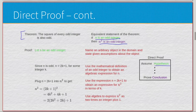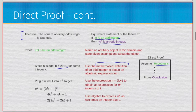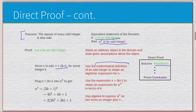We'll use an arbitrary object from the domain and state an assumption based on it. We use n equals 2k plus 1, because that is the mathematical definition of an odd integer — it will be true for every single odd integer based on the actual mathematical definition. Now plug n equals 2k plus 1 into n squared to get our result: n squared equals (2k+1) squared.